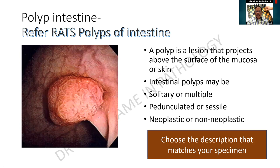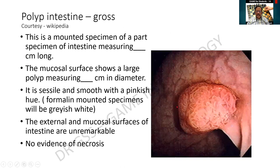Whenever we describe a polyp, there are certain things we should bear in mind: the number, the size and varying sizes, whether it is pedunculated or sessile, and what about the external surface. This is a mounted specimen of a part of the intestine measuring so many centimeters long. The mucosal surface shows a large polyp measuring so many centimeters in diameter. It is sessile and smooth, with a pinkish hue. In our colleges, fixed specimens will appear grayish white. The external and mucosal surfaces of the intestine are unremarkable, with no evidence of hemorrhage or necrosis.